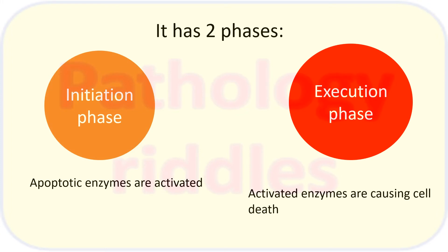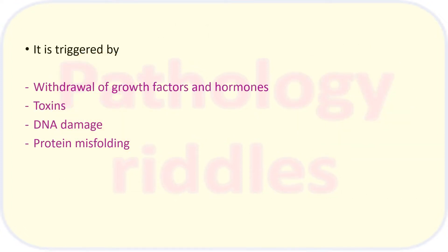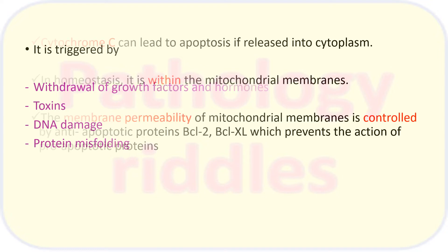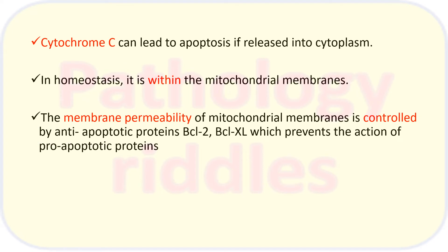The intrinsic pathway has two phases: first, the initiation phase, and second, the execution phase. In the initiation phase, apoptotic enzymes are activated. In the execution phase, these activated enzymes cause cell death. Conditions that trigger apoptosis include withdrawal of growth factors and hormones, external stimuli like toxins, DNA damage due to UV light, and protein misfolding.